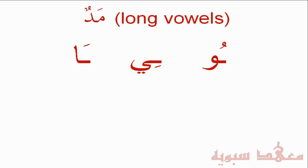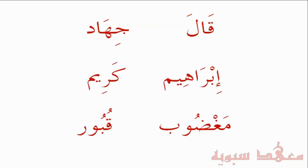We'll go through some words to see how the long vowels are pronounced. The first one is 'Qala' — notice the elongation of the A sound: 'Qaala', not 'Qala'. We have the Fathah on the Qaf followed by the Alif.